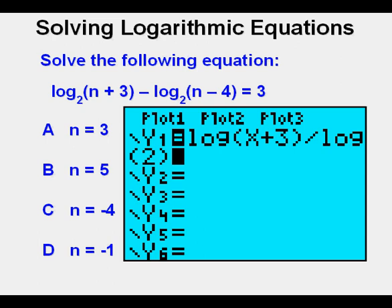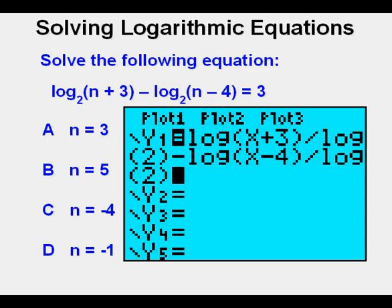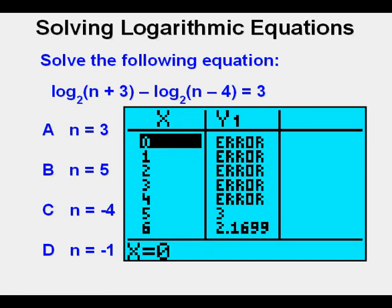Next, we again apply the change of base formula and subtract the log of quantity x minus 4 divided by the log of 2. Then we go to the table view by pressing 2nd, then graph. We see that for the input values of 0 through 4 the expression is undefined, but we're looking for the input value that gives us the output of 3. So the corresponding input value is 5, so 5 is our answer.